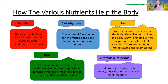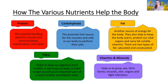Here's how the various nutrients help the body: Protein is an essential building block for muscle and tissue building, maintenance and repair. Carbohydrates are an essential food source for muscles and cells to perform their jobs. Fat is another source of energy — it helps keep our bodies warm, protects vital organs, and carries fat-soluble vitamins. There are also saturated and unsaturated fats, which we'll discuss with canola oil. Fiber keeps our digestive tract healthy and keeps us fuller longer, and is important in heart-healthy and diabetic diets. Vitamins and minerals help us see, grow, form bones, muscles, skin and organs, and help us fight infections.